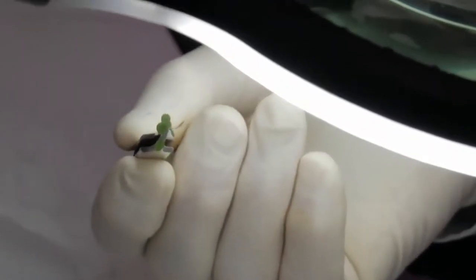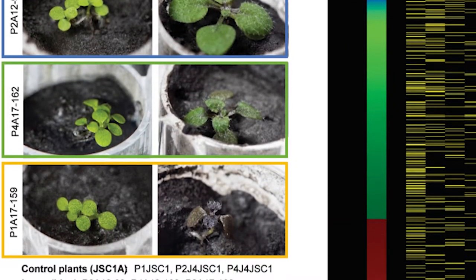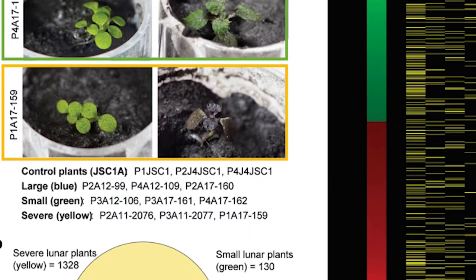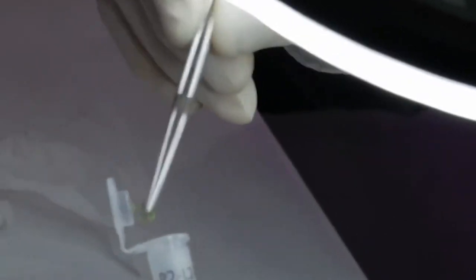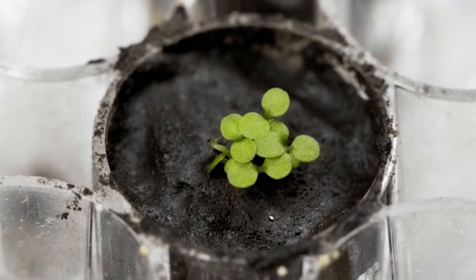Changes in 465 genes were expressed in the Apollo 11 plants, while 265 genes were expressed at varying rates in the Apollo 12 plants, and 113 genes were expressed in the Apollo 17 plants. The majority of these changes were brought on by stress.